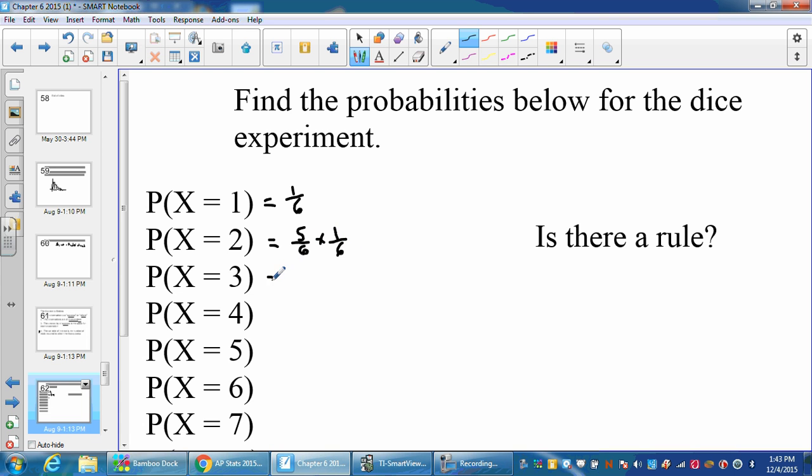The probability that you get it on your third roll means you didn't get it on your first roll. You didn't get it on your second roll. But you did get it on your third roll. And so on and so on.